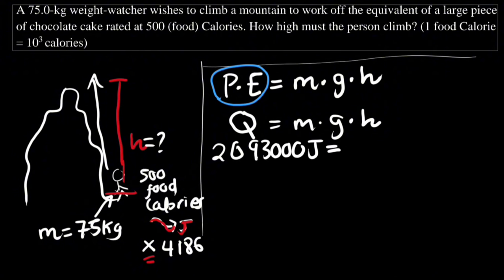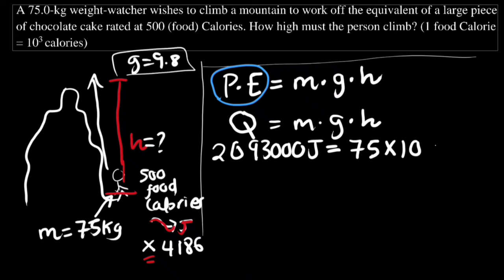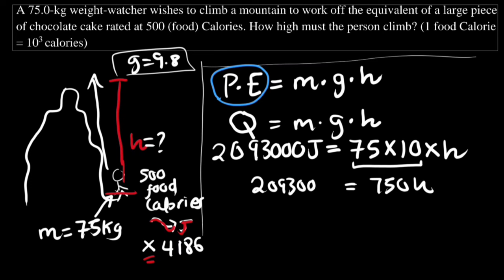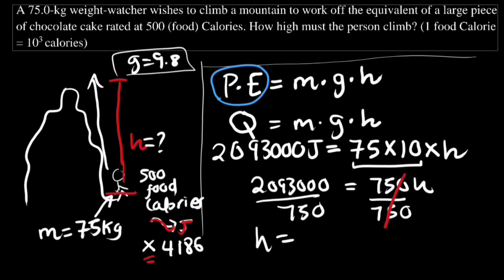So 2,093,000 = 75 × 10 × h. That gives 750h = 2,093,000, so h = 2,093,000 ÷ 750 ≈ 2790.66 meters.